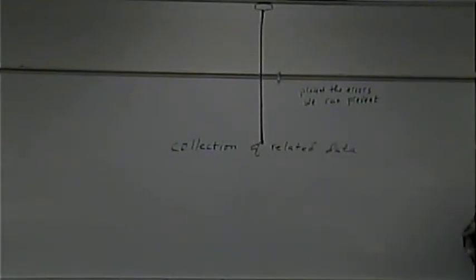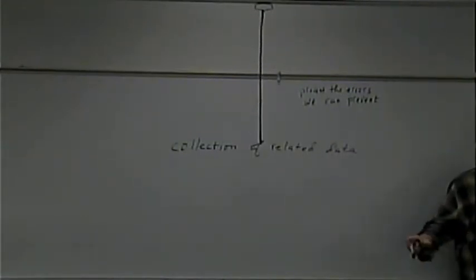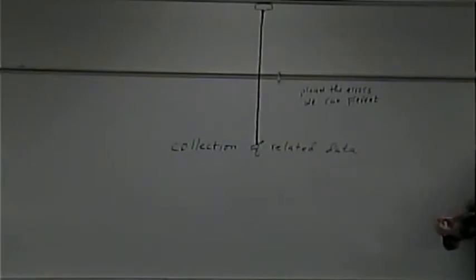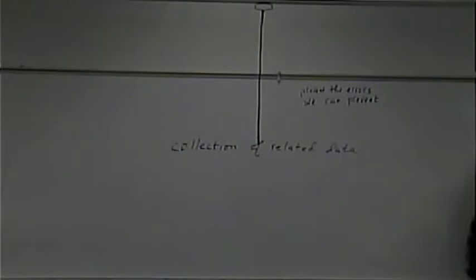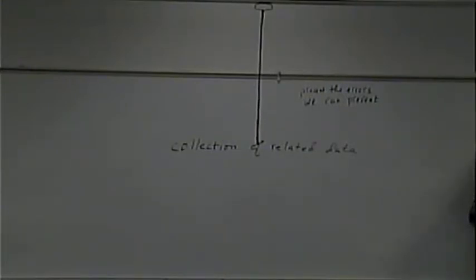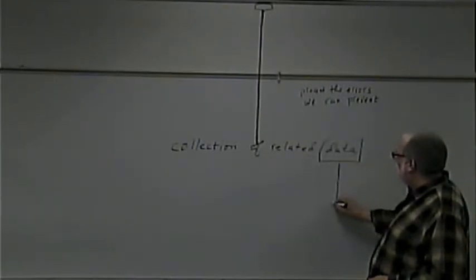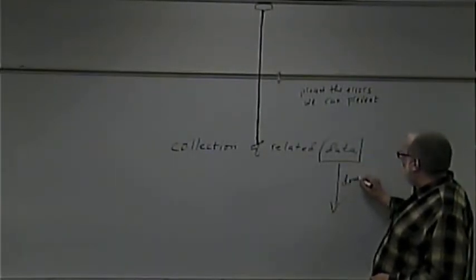In general conversation, people use 'data' and 'information' interchangeably. But in IT, they typically mean different things. You use data to derive information — from data, you derive information.